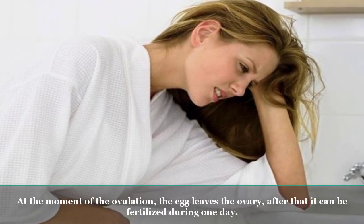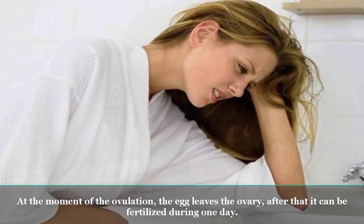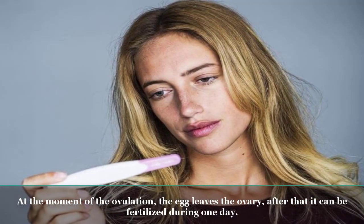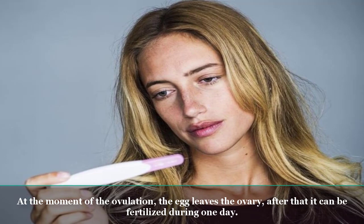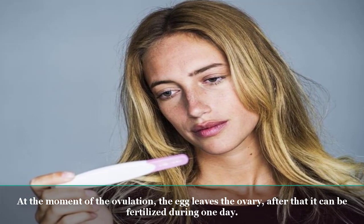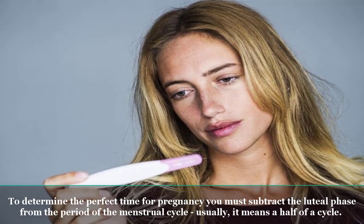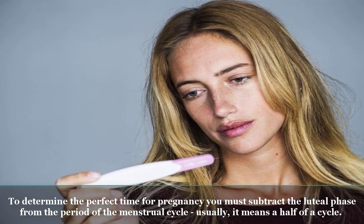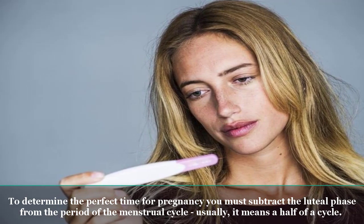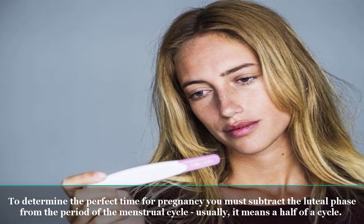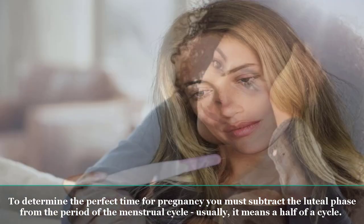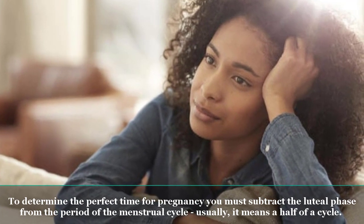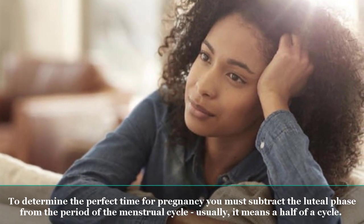At the moment of ovulation, the egg leaves the ovary, after which it can be fertilized during one day. To determine the perfect time for pregnancy, you must subtract the luteal phase from the period of the menstrual cycle — usually it means a half of a cycle.